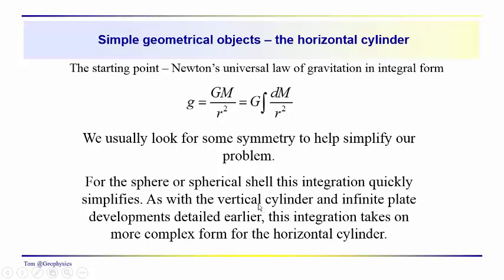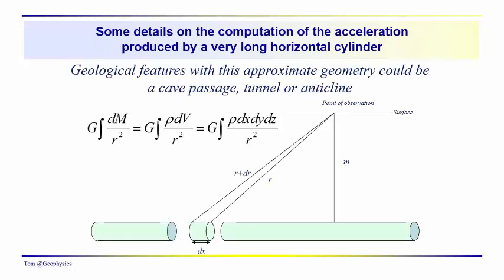This makes integration a little bit more difficult — maybe a little more like the vertical cylinder and the infinite horizontal plate, but not quite. We're assuming that the cylinder is an object used to represent a geological feature like a cave passage, tunnel, or anticline.